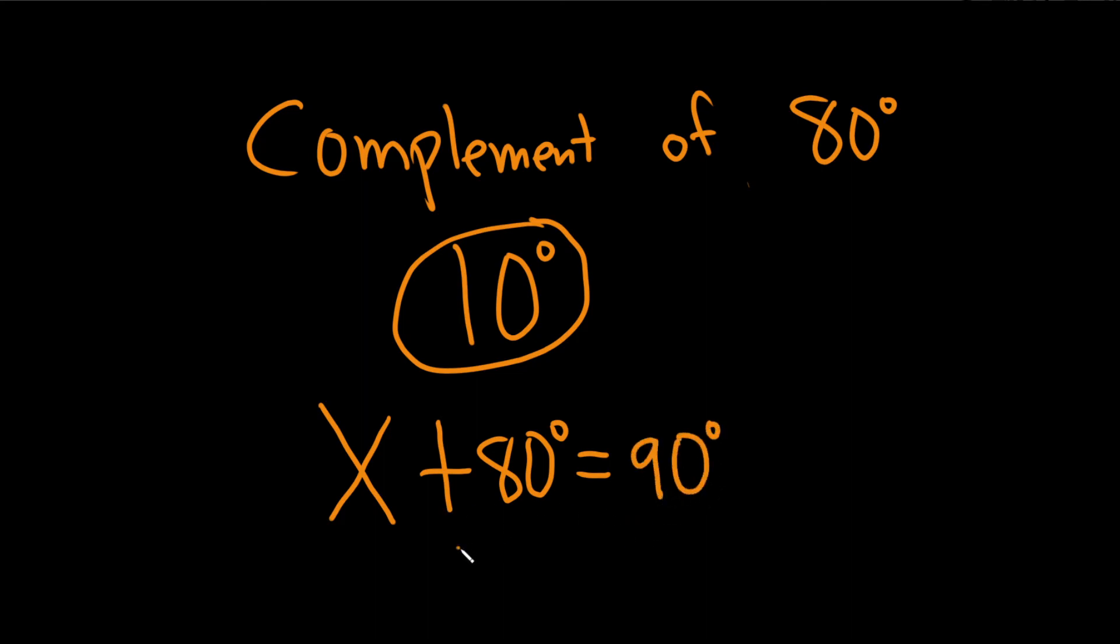And then you can just solve this for x by subtracting 80 from both sides. So minus 80, minus 80, and you end up with x equals 10 degrees.